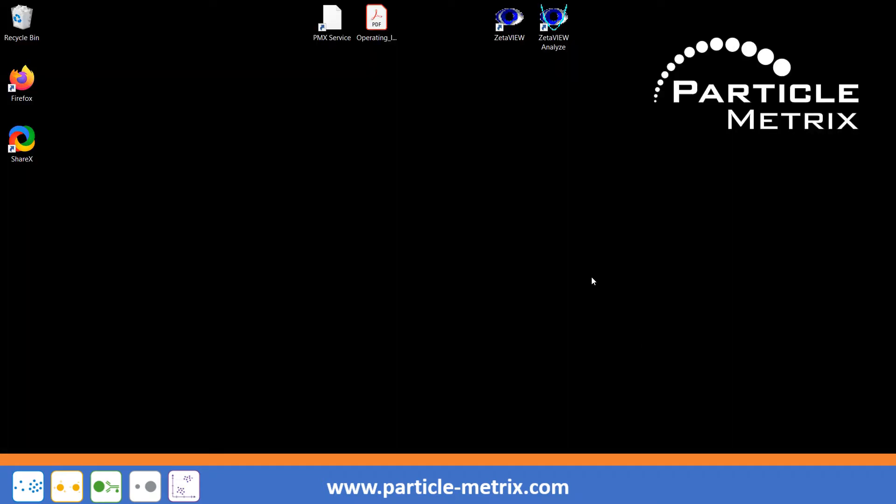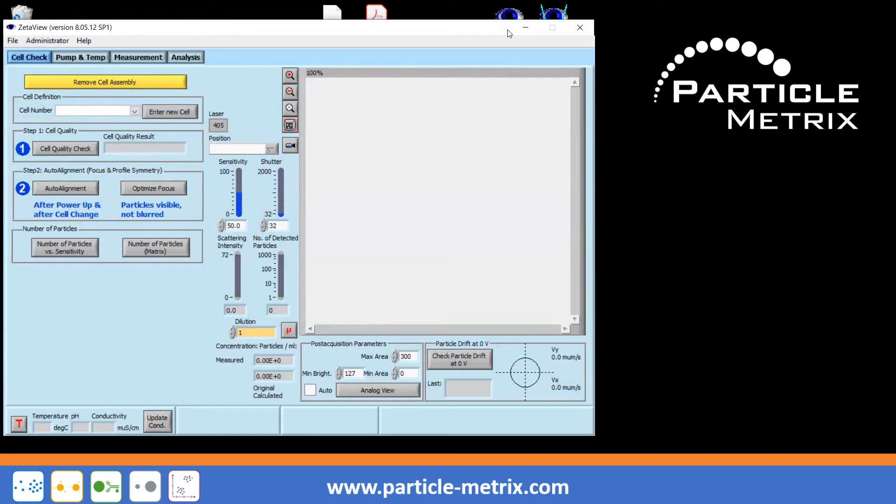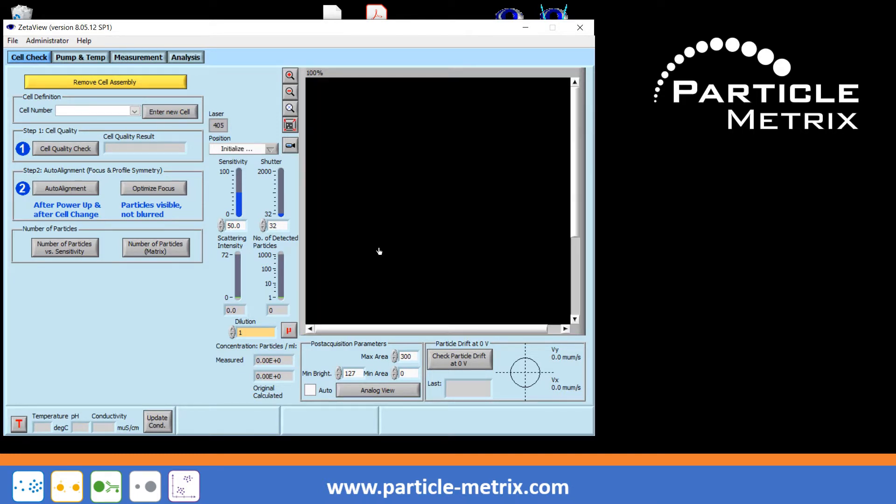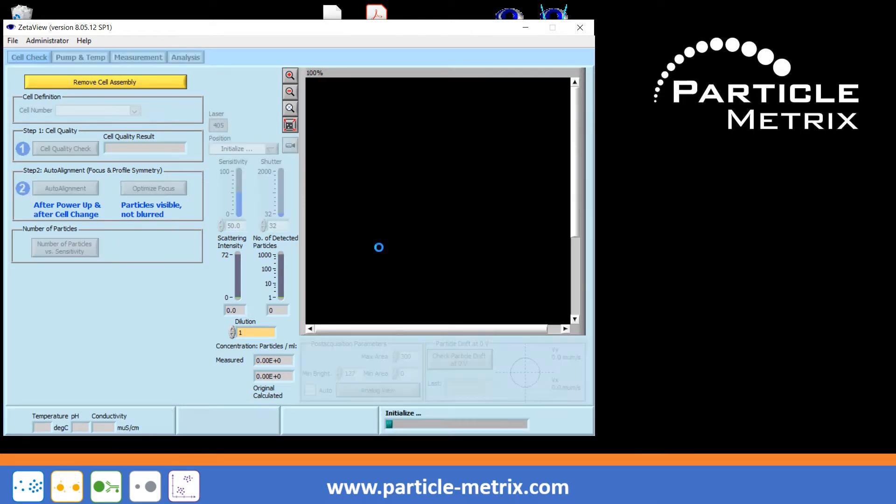Start the ZetaView software by double-clicking the ZetaView icon on the desktop. If the ZetaView instrument is equipped with an automatic slider for fluorescence filters, you can hear the noise of the mechanism when the slider moves to the first and to the last filter position.